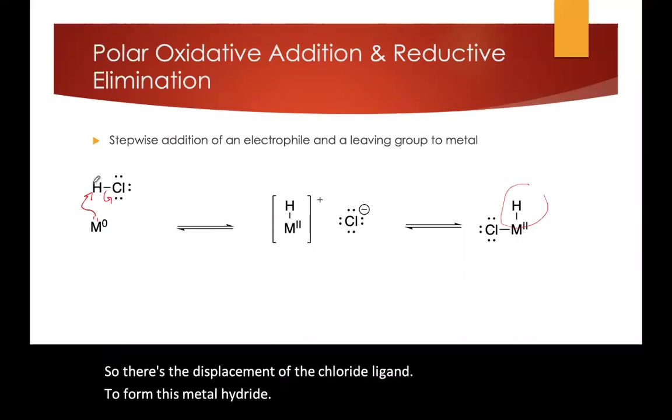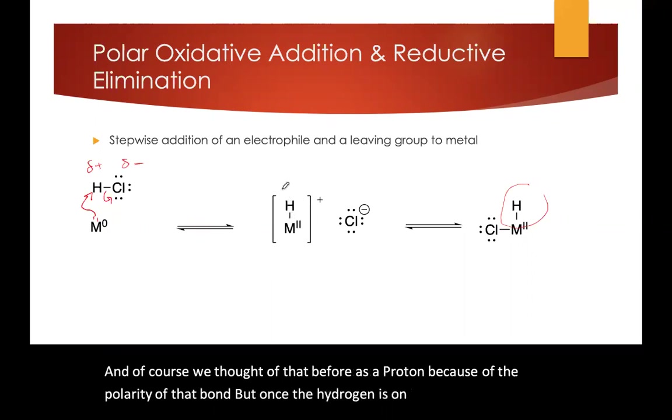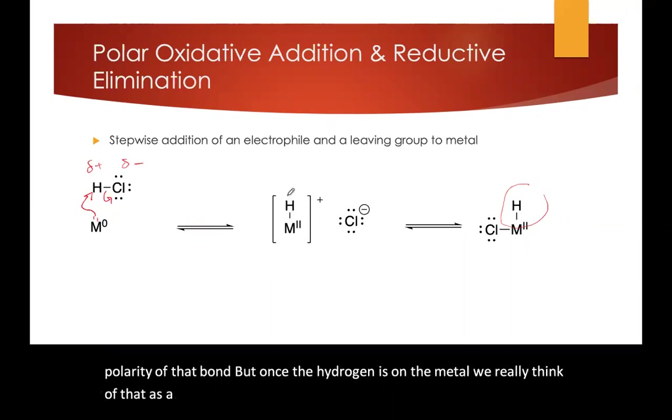And of course, we thought of that before as a proton because of the polarity of that bond. But when the hydrogen is on the metal, we really think of that as a hydride. It's H minus now.